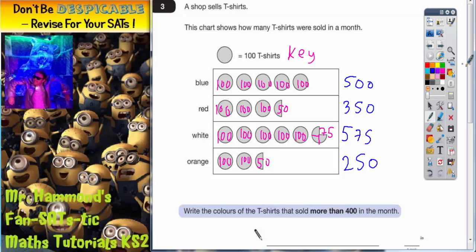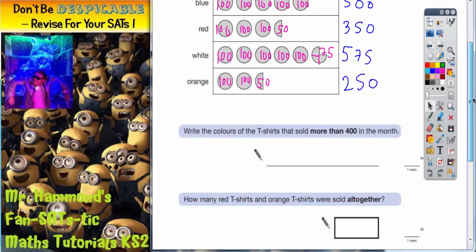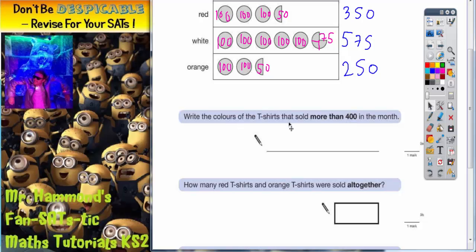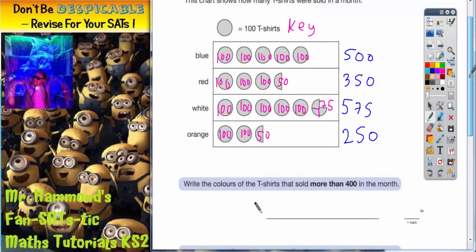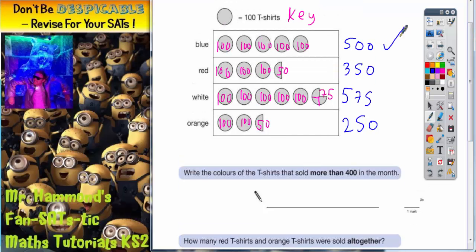Now you're in a position to actually answer the questions. So let's scroll down and see what we've got to do. It says write the colours of the t-shirts that sold more than 400. Well, 500 is more than 400, and 575 is more than 400. These two are less than 400. So the colours we're interested in are blue and white.